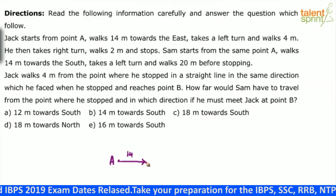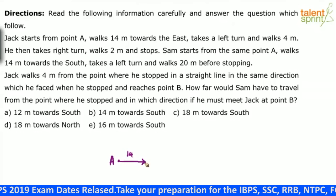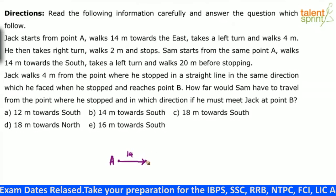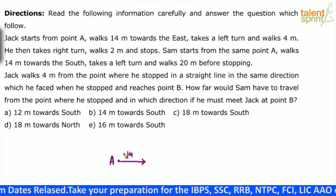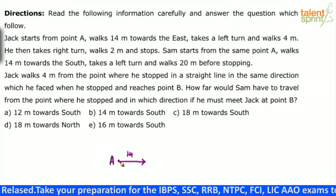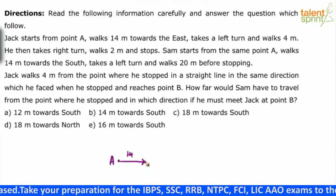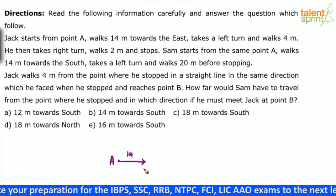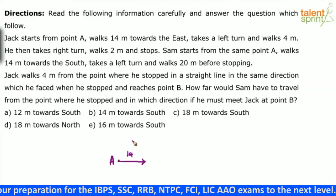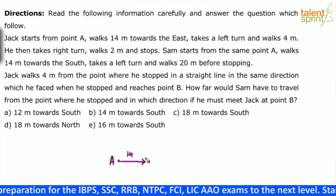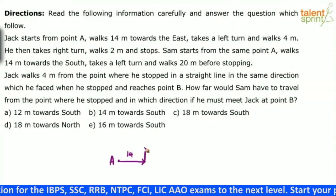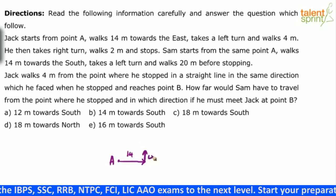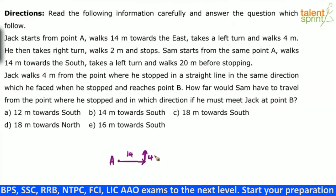Now understand: when a person is moving towards east and takes a left turn, he would now be heading north. Imagine yourself moving in that direction — when you are facing east, left will be towards your north and right will be towards south. So he takes a left turn, which means he has turned towards north and walks 4 meters.